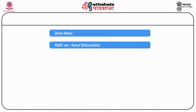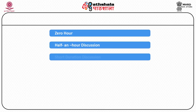Then comes the half-an-hour discussion, meant for raising discussion on matters of public importance which have been subject to a lot of debate and whose answers need clarification on facts. The Speaker can allot three days a week for such discussion, and there is no formal motion or voting before the house.